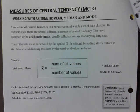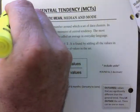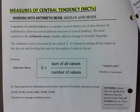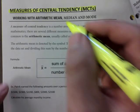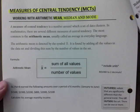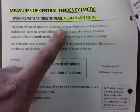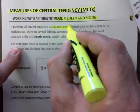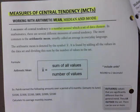The first thing to introduce is what you've been learning since junior high: the measures of central tendency. It's basically the mean, the median, and the mode. A measure of central tendency is a number around which data cluster — it tends to happen mostly around that number. In mathematics, there are several different measures of central tendency.